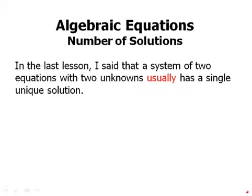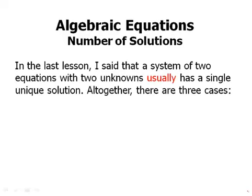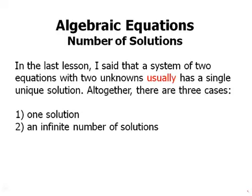In the last lesson, and in fact, the last couple lessons, I said that a system of two equations with two unknowns usually has a single unique solution. Altogether, there are three cases. There's the case of one unique solution for x and y. There's the case of an infinite number of solutions. Then there's the case of no solution possible, no solution at all.